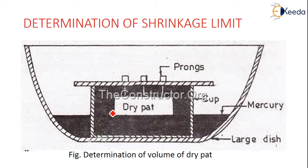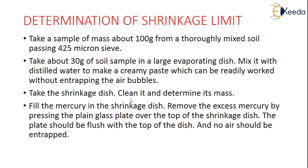This is the equipment for determining the shrinkage limit. Take a sample of about 100 grams of thoroughly mixed soil passing through the 425 micron sieve, and about 30 grams in a large evaporating dish. Mix with distilled water to make a creamy paste, ensuring no air bubbles are entrapped. Take the shrinkage dish, clean it and determine its weight, then fill mercury into the shrinkage dish as shown in the figure.